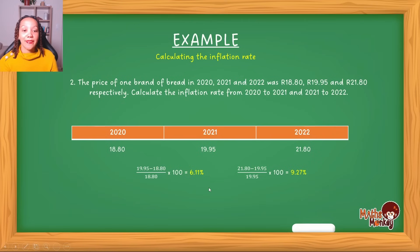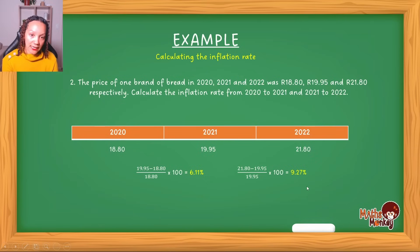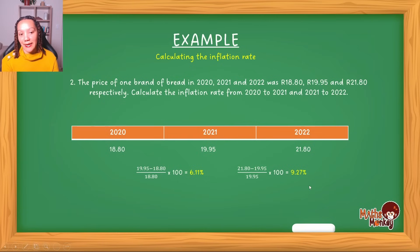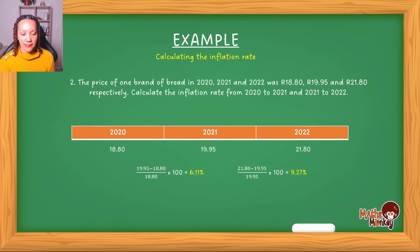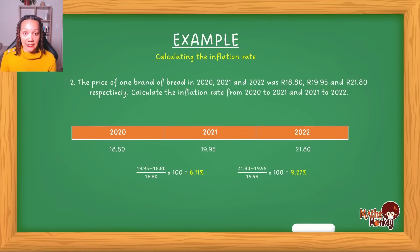For 2021 to 2022: 21.80 minus 19.95 as the numerator, divided by 19.95 (the 2021 value), multiplied by 100, gives 9.27%. So from 2021 to 2022, this brand of bread went up by 9.27%. To summarize: example one added the inflation rate to get end prices; example two went from end prices back to previous prices; and example three used both prices to calculate the percentage increase between them.